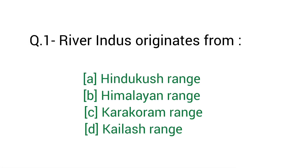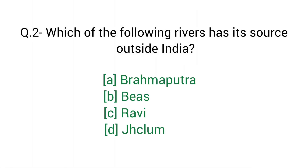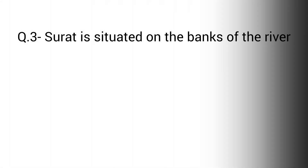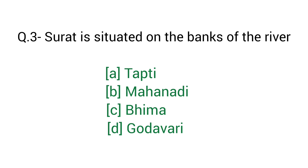Question number 1: River Indus originates from — right answer option D: Kailash Range. Question number 2: Which of the following rivers has its source outside India? Right answer option A: Brahmaputra. Question number 3: Surat is situated on the banks of the river — right answer option A: Tapti river.